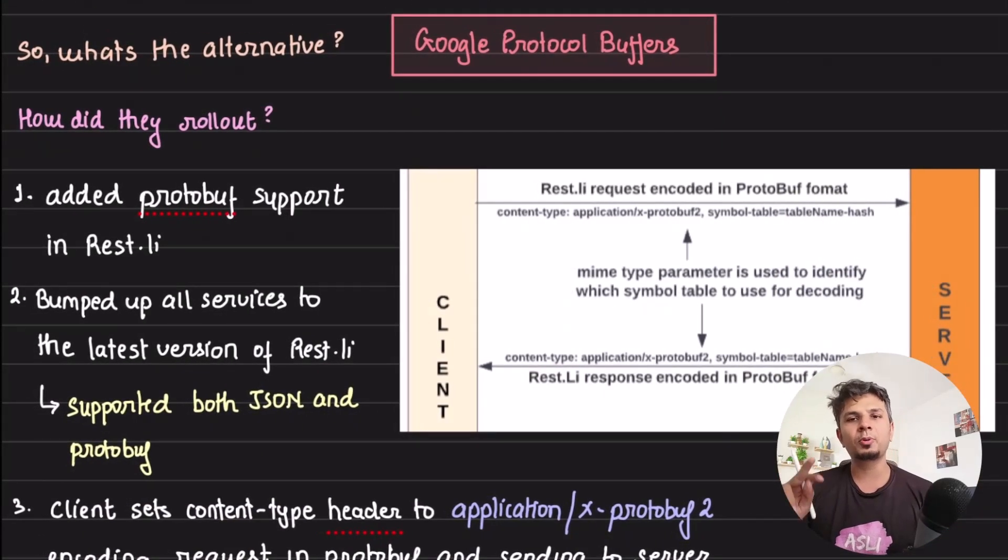So what alternative did they go with? They went with Google Protocol Buffers. In case you are unaware about Google Protocol Buffers, you are just a Google search away for that. But this is something which is very heavily used with gRPC. People typically think of Google Protocol Buffers in conjunction with gRPC, but Google Protocol Buffers can also be used in isolation - it is just a packing format. I already have a video on RPC, I'll link it in the icard, so give it a watch if you are interested.